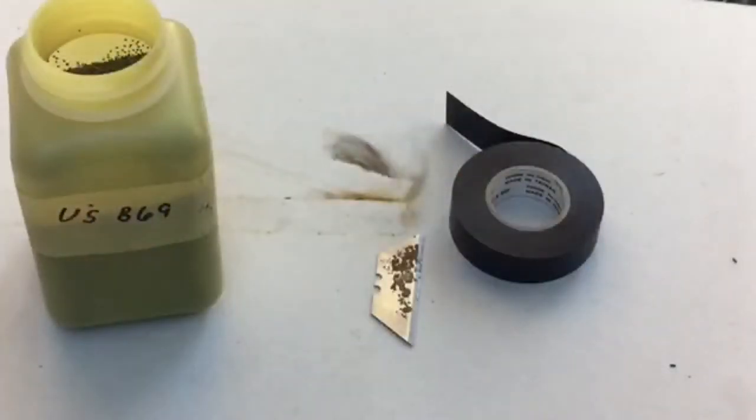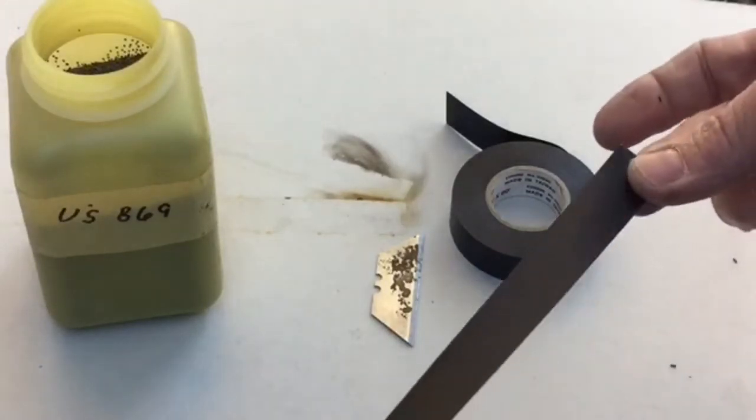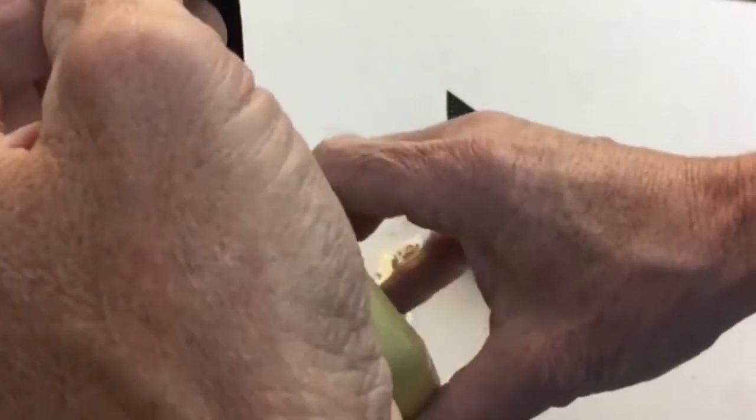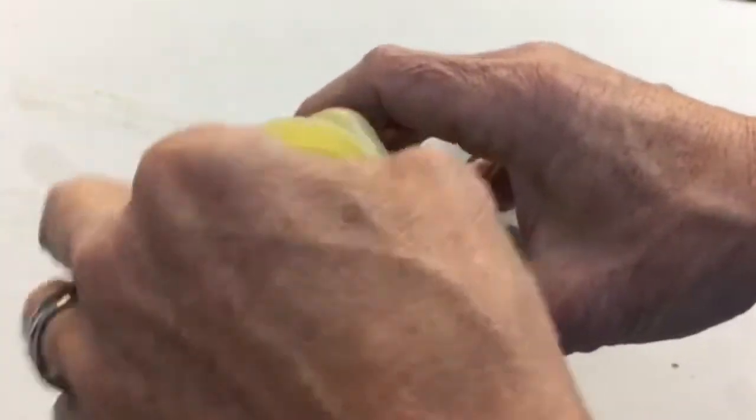Today we're going to show you how to make a homemade fuse out of gunpowder and electrical tape. Cut your piece of electrical tape however long you want it, take your gunpowder, and dip your electrical tape.